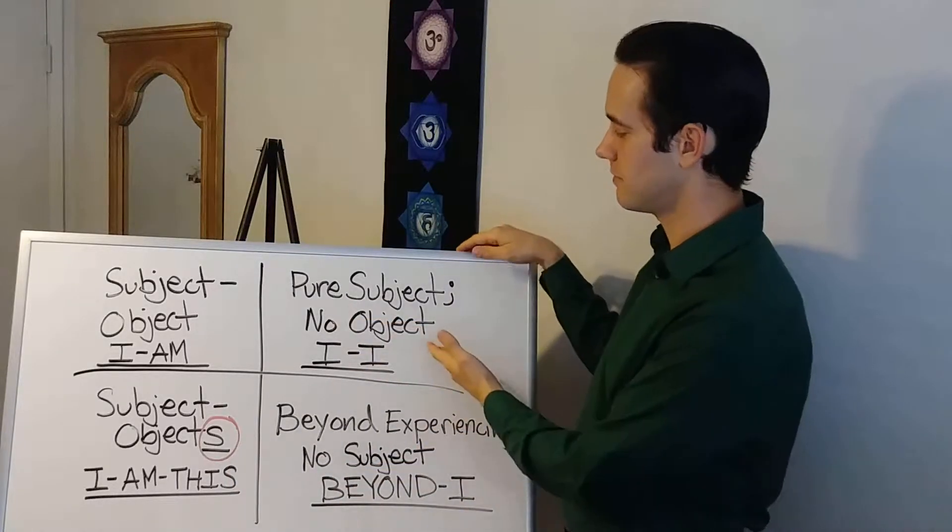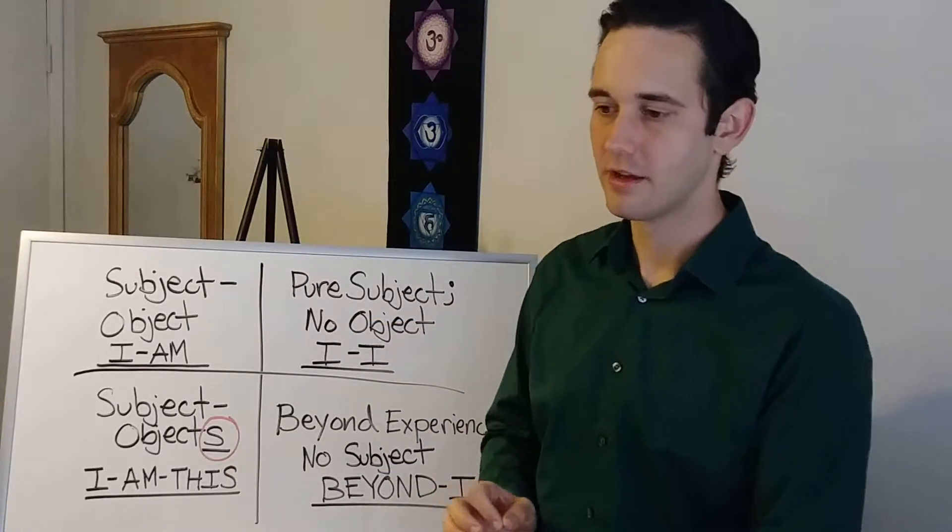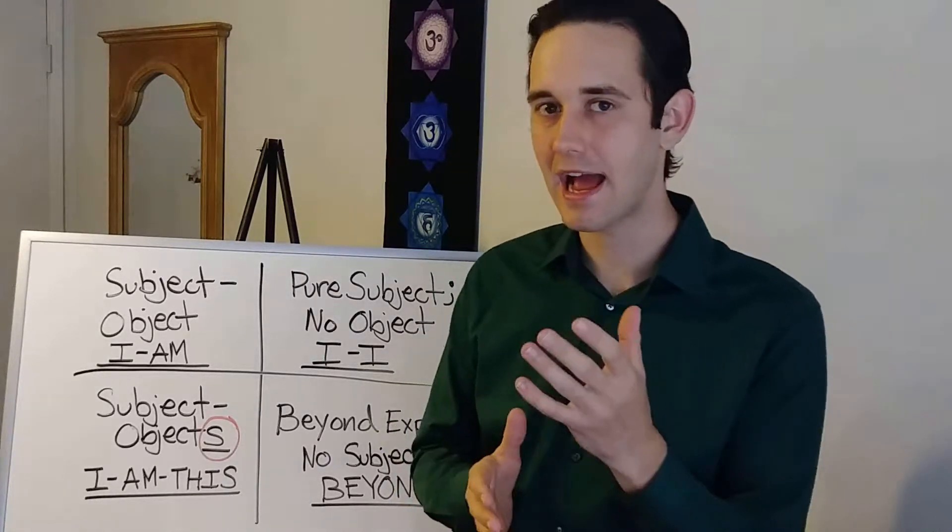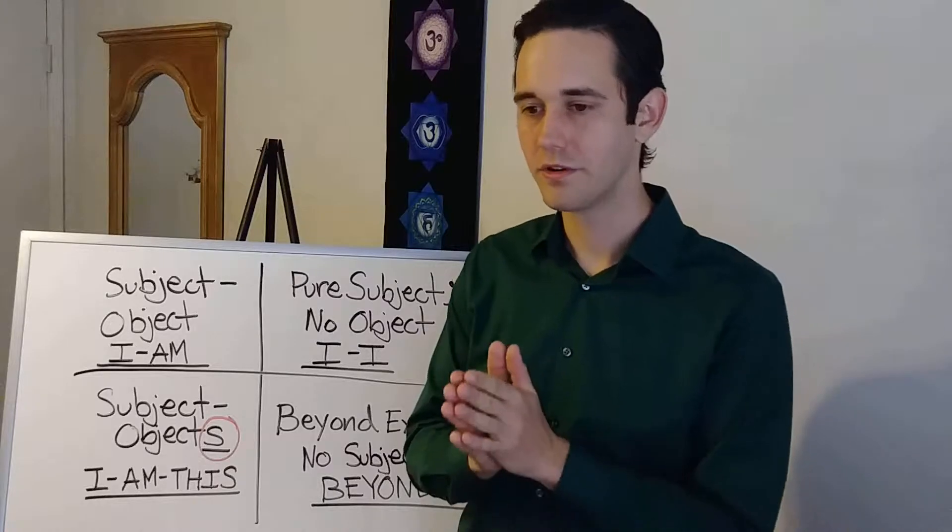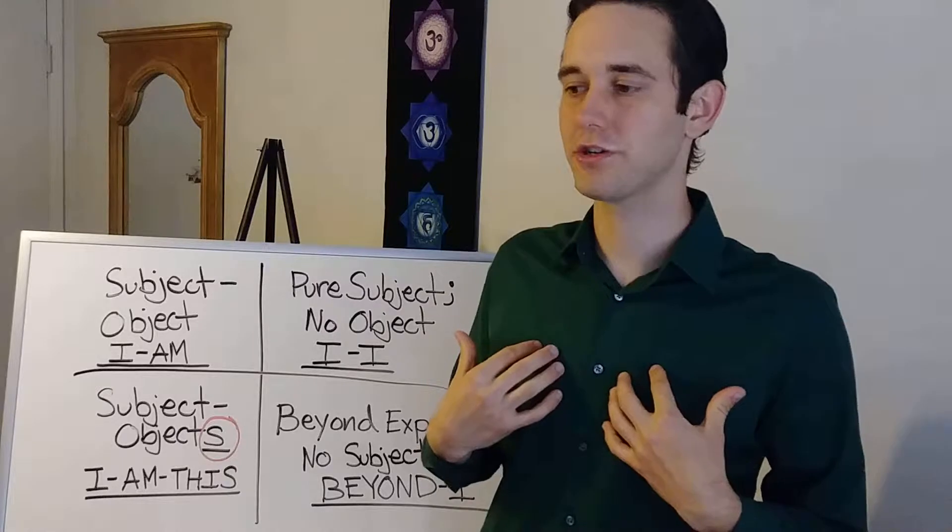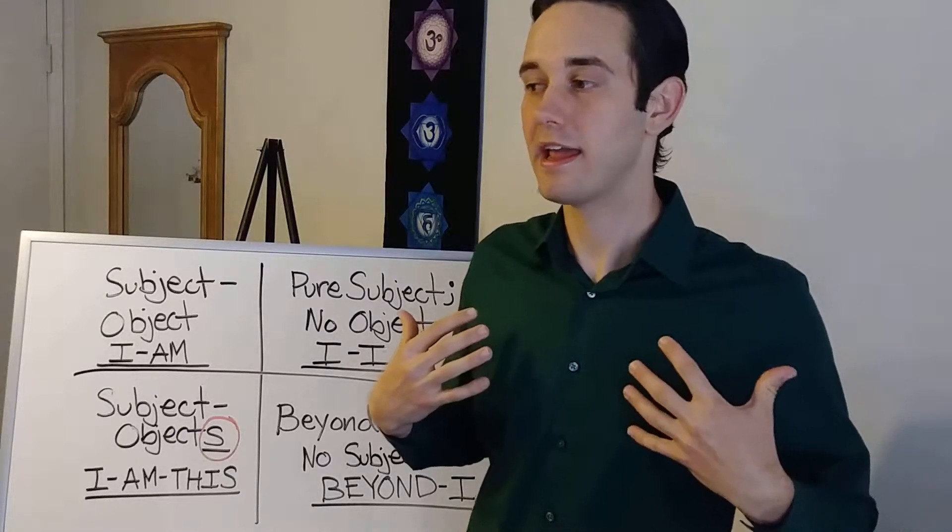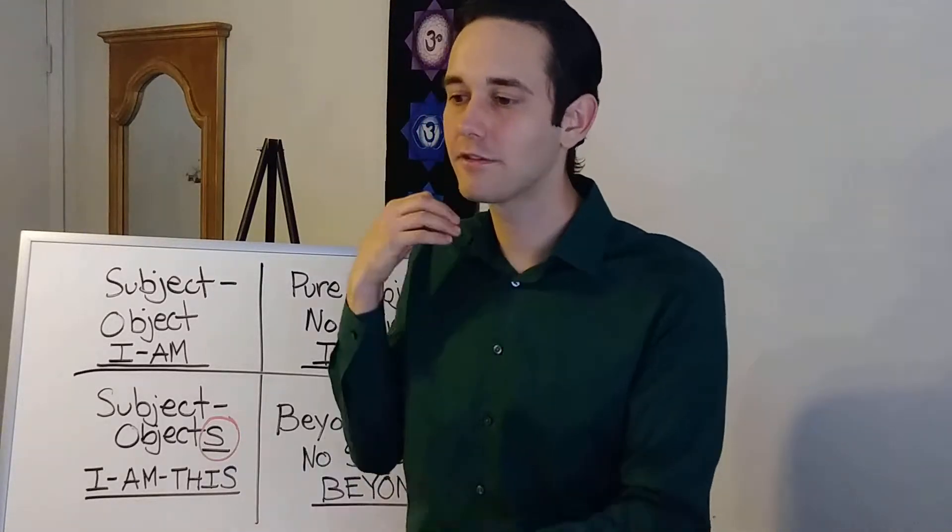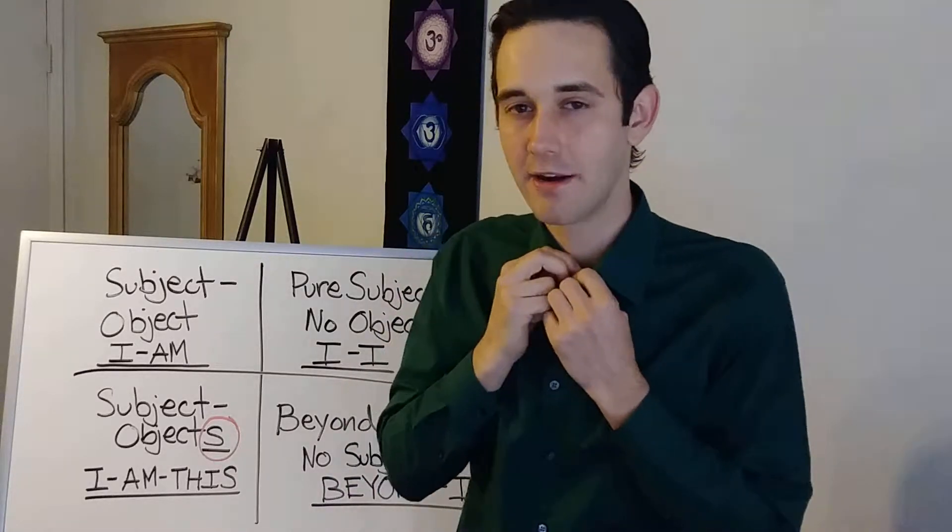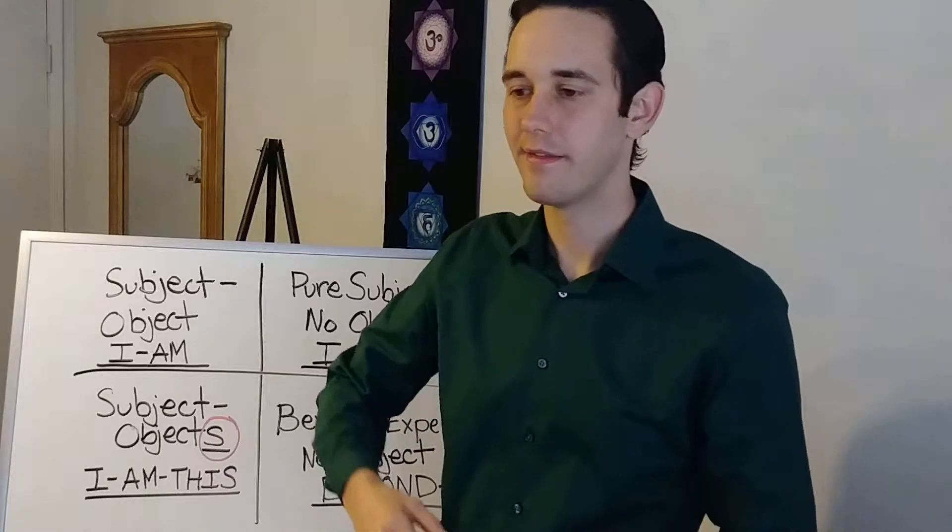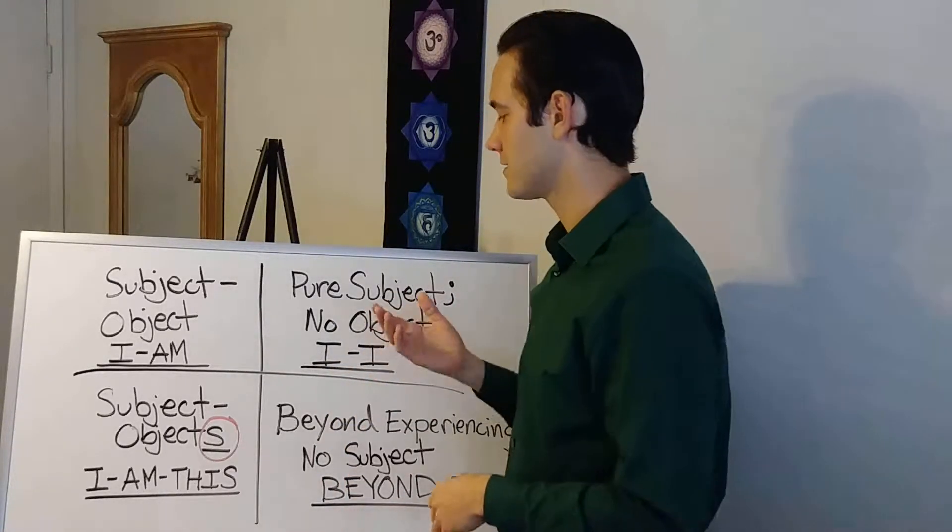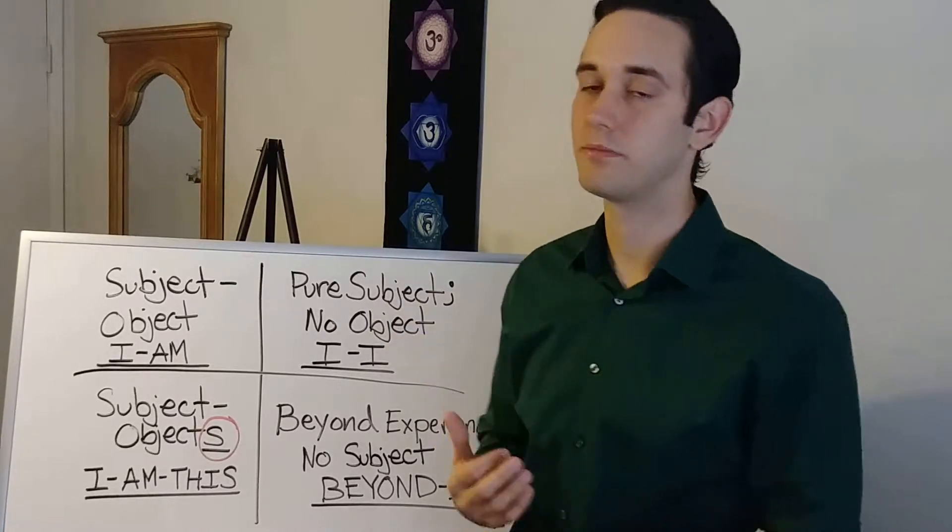The pure subject and no object is the I-I. This can be best described when an artist is in their work, when someone is in the act of creating. It's like a rush of like I have to do this, I have to get this out of me. It's not that you identify with it, it's that it passes through you. Like it needs to go through you, you need to go through it. That is the pure subject, no object relationship.